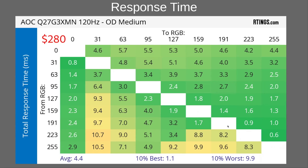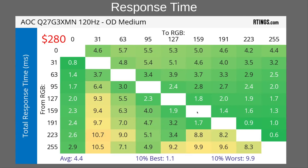Whoever makes this display — if you could bring those problematic transitions down a little, this would be a really killer affordable panel. Interestingly, at 120Hz this monitor actually gets better for most transitions, though the dark-area transitions specifically got worse. However, at 60Hz it gets a lot worse — if you have to run this at 60Hz, you probably don't want this monitor, as you're almost certainly going to notice the poor transitions.